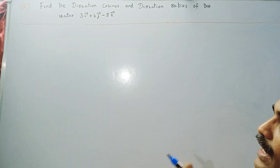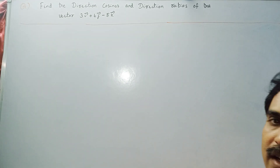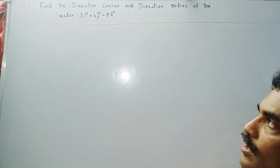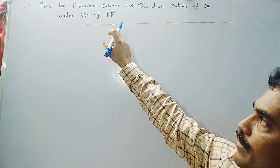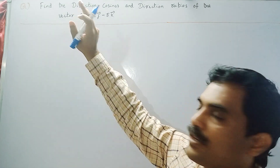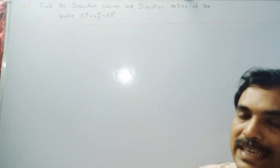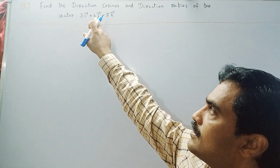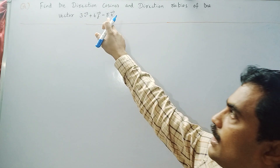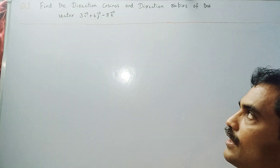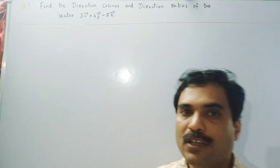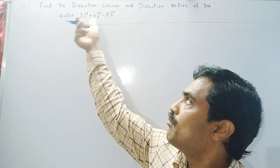Since they are given a vector, you can write this vector as a bar equal to 3i bar plus 4j bar minus 5k bar. This 3 is nothing but the i bar coefficient, which you can take as x. Similarly, this 4 is the j bar coefficient, you can take that 4 as y. And here the k bar coefficient is minus 5, you can take that as z.